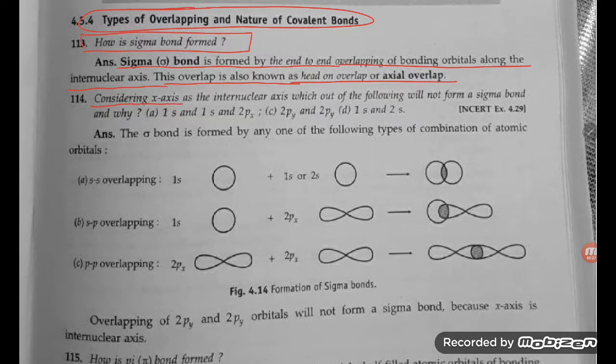Considering the x-axis as the internuclear axis, which of the following will not form a sigma bond? 1s and 1s will form a sigma bond.